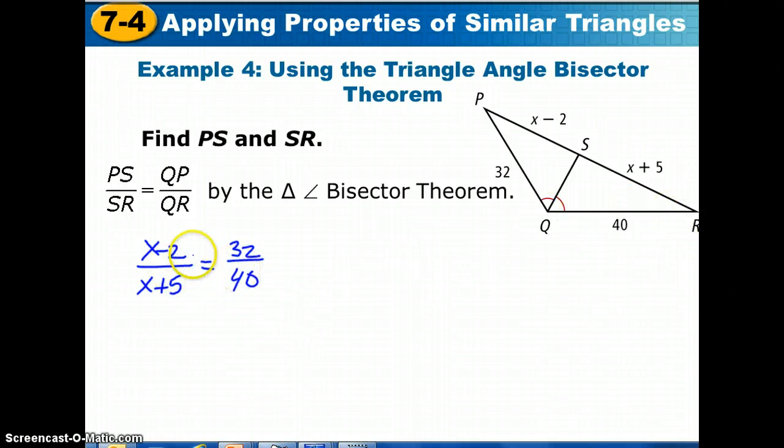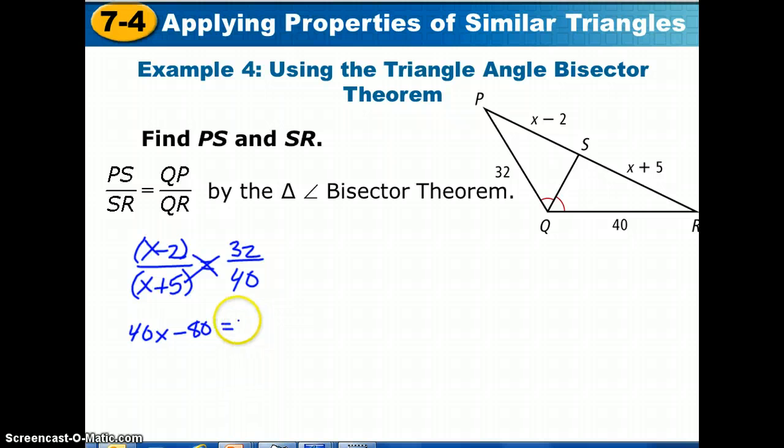Once again, all we have to do is cross-multiply, take our cross-products, but remember when doing so here, we're going to take 40 times all of x-2. That means we will distribute it to this quantity. And the same with 32 and x plus 5. So, 40 times x is 40x. 40 times minus 2 is minus 80. That should equal 32x plus 5 times 32, which is 160.